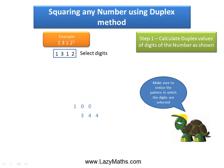And then we select the entire number 1312 and we find the duplex value for that number. And we get 2 times 1 times 2 plus 2 times 3 times 1 and we get the duplex value as 10 and we write it down as it is.